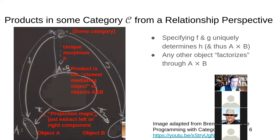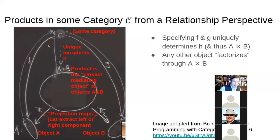In any category, this is what defines the product — every other object in this form has to factorize through it with a unique morphism that makes the diagram commute. Co-product is just a flip of this arrow-wise, where we have injections instead.